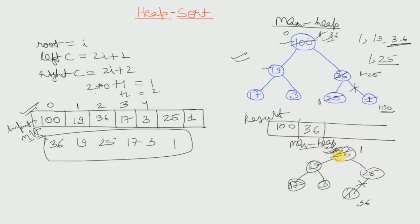Now we will max heapify. We have three elements in consideration: 1, 19 and 25. Obviously 25 is the largest, so 25 will replace 1 and 1 will come to 25's location. Then we max heapify this 1 — since it has no left or right child, as we have unlinked them, we stop here. The percolate down operation also stops. So we have got the second element — the 0th and first index of the result.